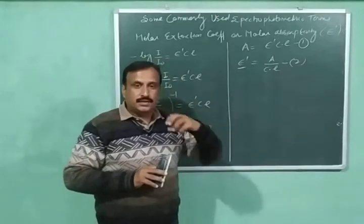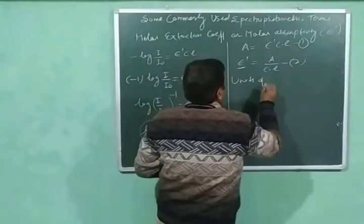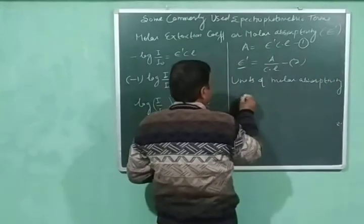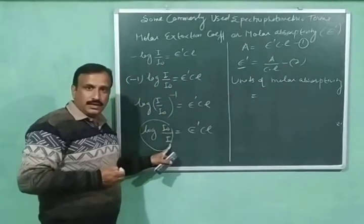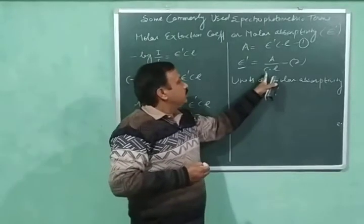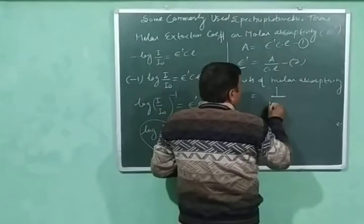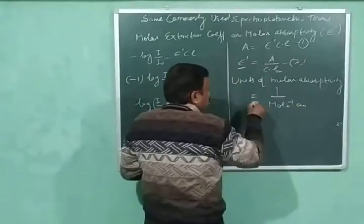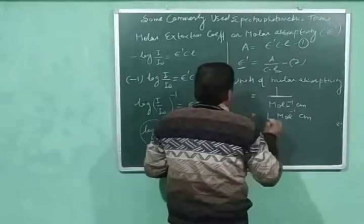Now let us understand the units of molar absorptivity. Absorbance is a unit-less quantity because it is log(I-naught/I), a ratio of same quantities. So the units of molar absorptivity depend on concentration and length. Since concentration is in moles per liter and length is in centimeters, the units of molar absorptivity are liter·mole⁻¹·centimeter⁻¹.